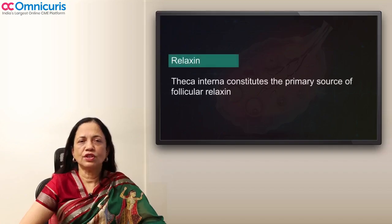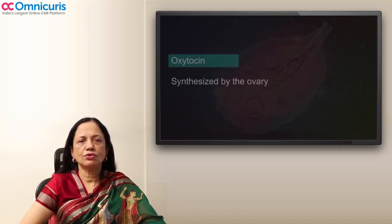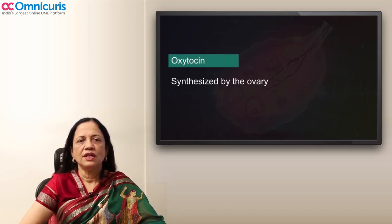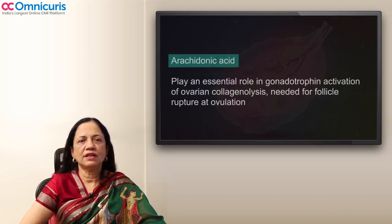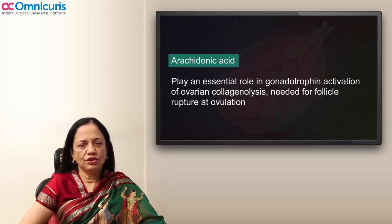The relaxin hormone — the theca interna constitutes the primary source of follicular relaxin. Oxytocin is also released by the ovary. The arachidonic acid plays an essential role in gonadotropin activation of ovarian collagenolysis needed for follicle rupture at ovulation.